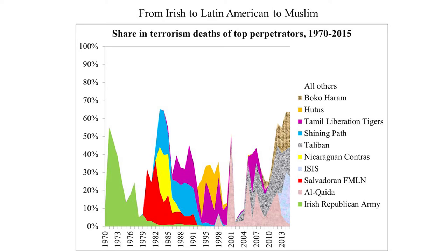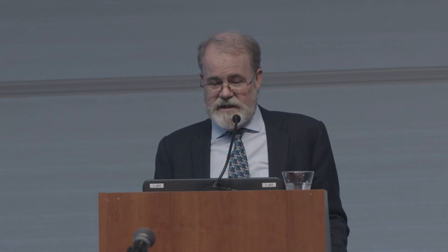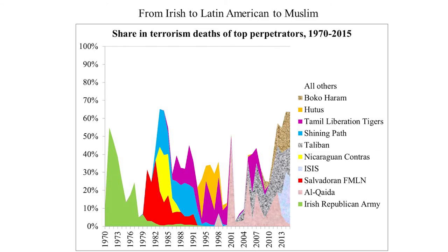Who are the terrorists also keeps changing over time. In the 70s it was the IRA. In the 1980s it was Latin American terrorists like the Shining Path and the Nicaraguan Contras, that we ourselves were supporting in the US. It's only been recently that most of the terrorist deaths have been associated with Muslim fundamentalist groups.